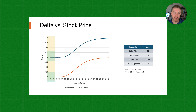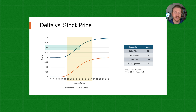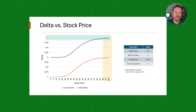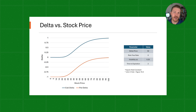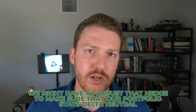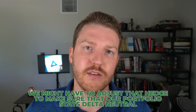As we increase the stock price and it gets close to the strike price — when the stock price is 50 — we should see a call Delta at about 0.5 and a put Delta at about negative 0.5. As we increase the stock price all the way to 100, the call option becomes far in the money with a Delta near one and the put Delta near zero. This illustrates that once we lock in a Delta hedge, as the price changes or as time to maturity passes, we may have to adjust that hedge to keep our portfolio Delta neutral.